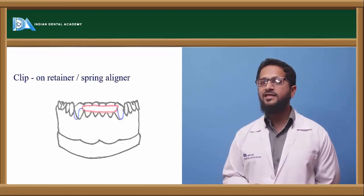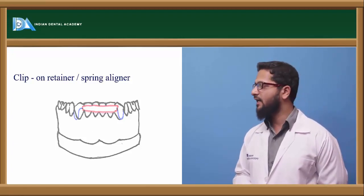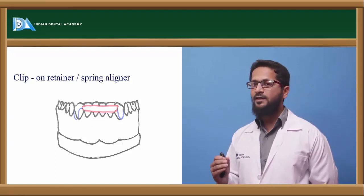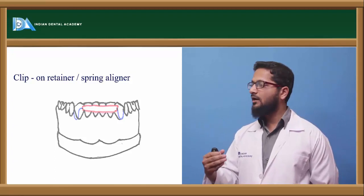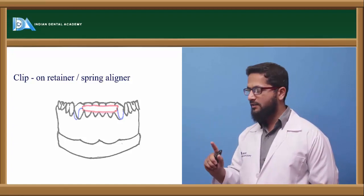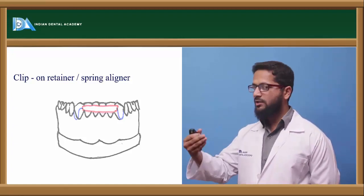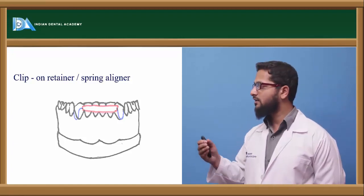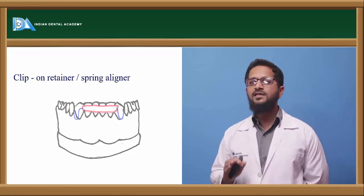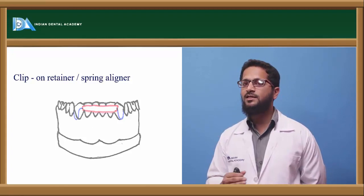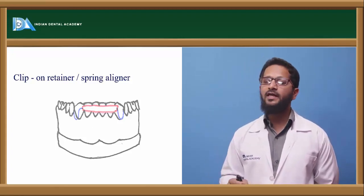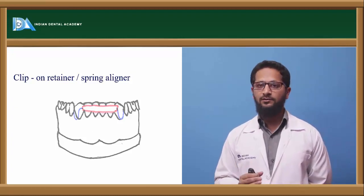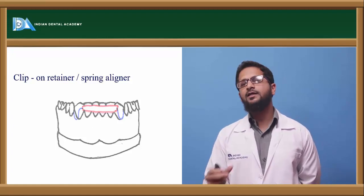The clip-on retainer or spring aligner has a labial wire running along the labial aspect of the incisors, curving under the canine and going posteriorly on the lingual aspect, adapting to the lingual surface of the teeth. Between the labial and lingual wires there is a thin strip of acrylic to prevent irritation. This retainer can also be used to bring about minor corrections in alignment — for mild crowding, the teeth are first aligned on a wax setup and then the retainer is constructed on that setup.